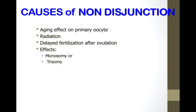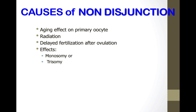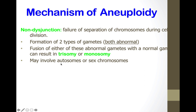Causes of non-disjunction include the aging effect on primary oocytes, radiation exposure in women, and delayed fertilization after ovulation — the longer the egg waits for sperm, the more likely non-disjunction will occur. The effects are either monosomy or trisomy.